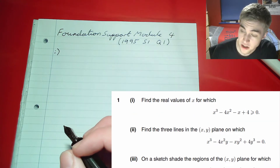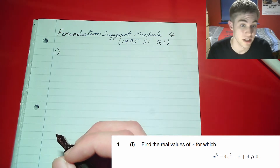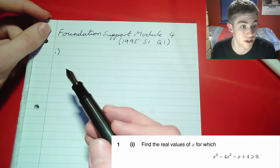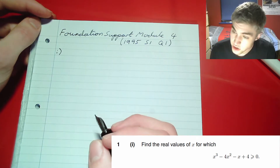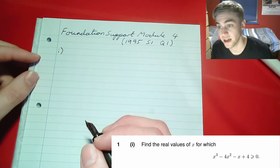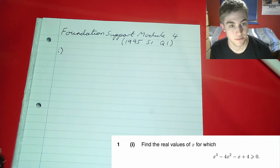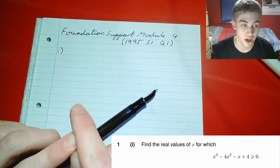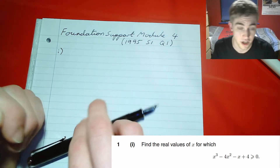The first part is asking us to look at a cubic inequality and solve for the values that satisfy it. We're going to get a range of values because it's an inequality. With an inequality, we'll solve the equality first and then figure out which direction is satisfied.